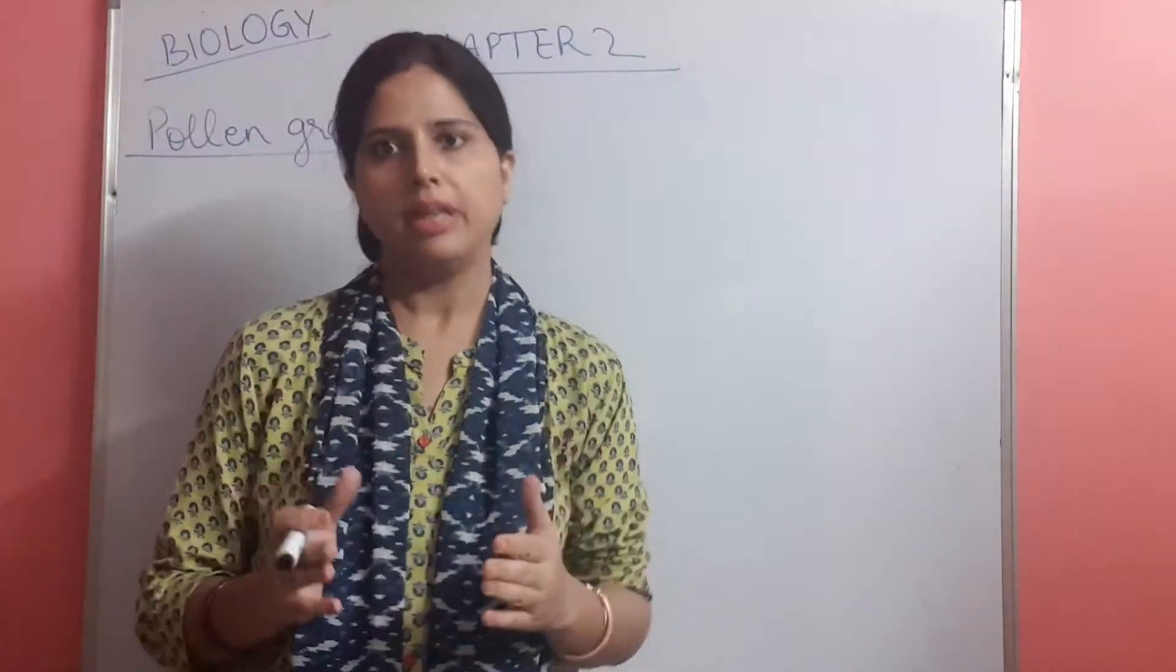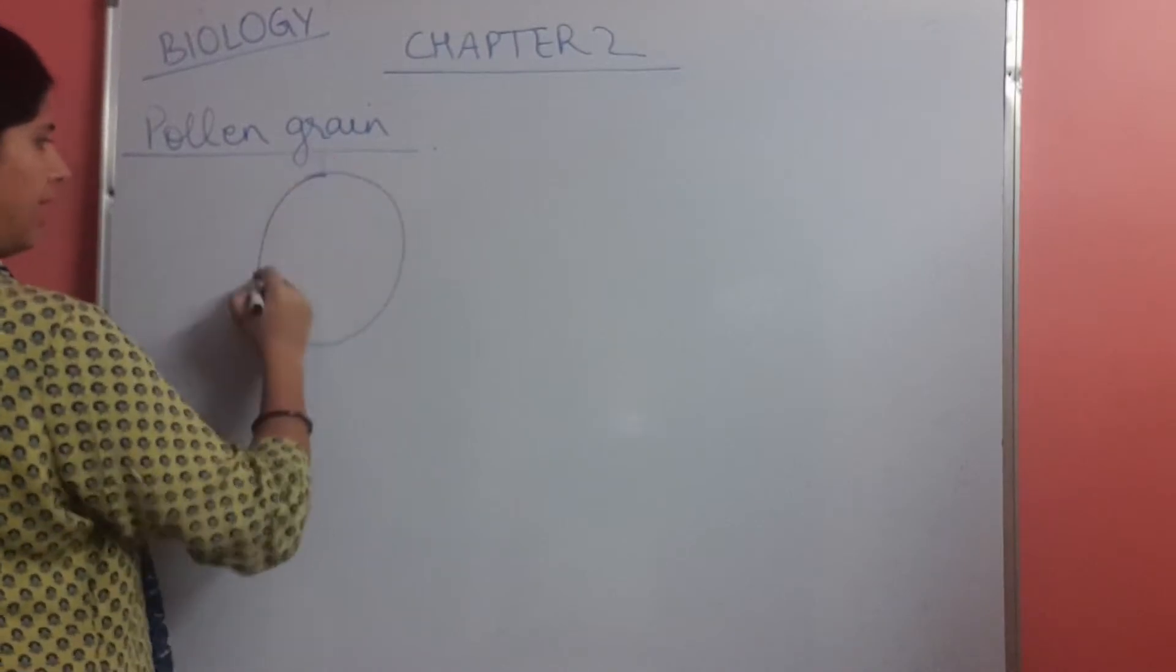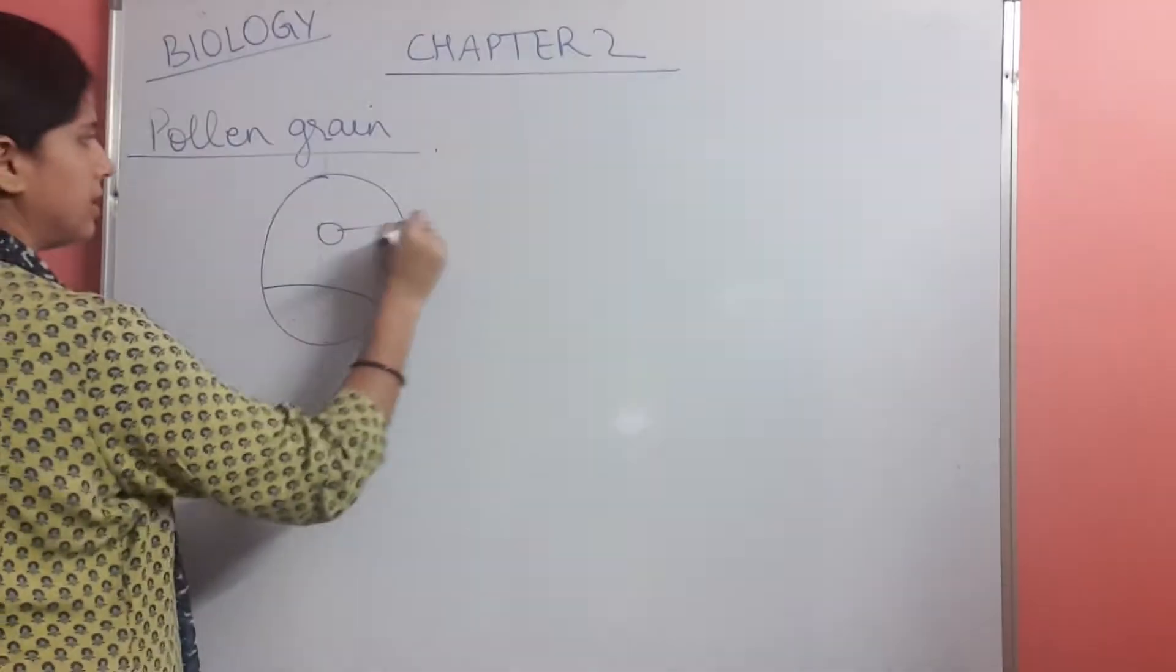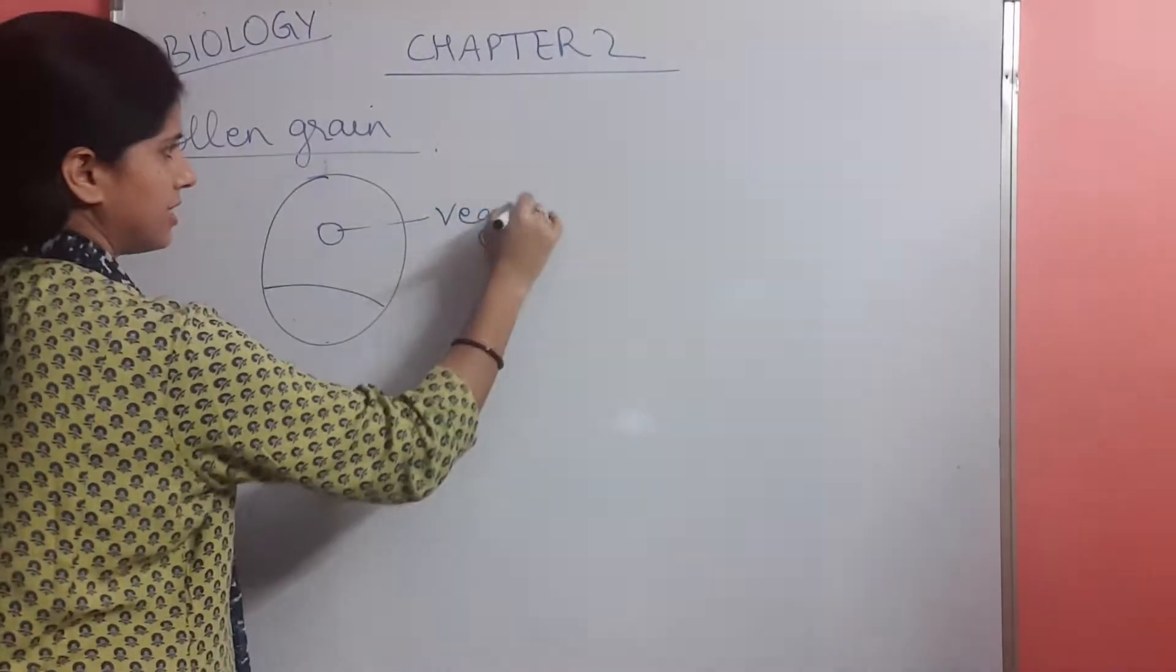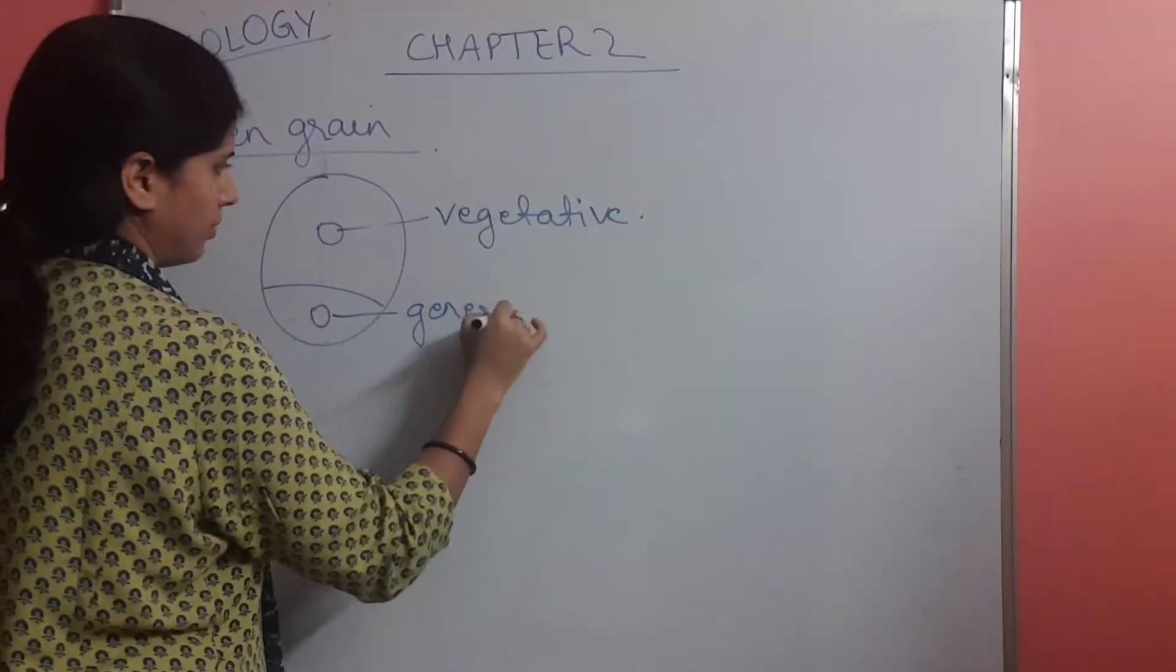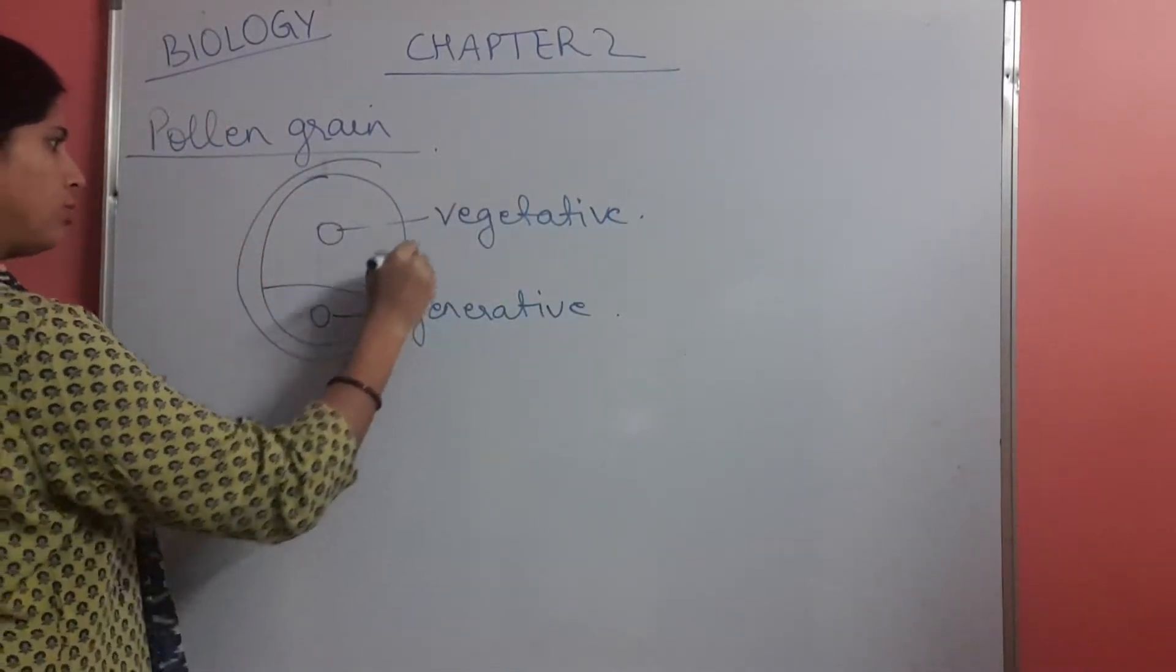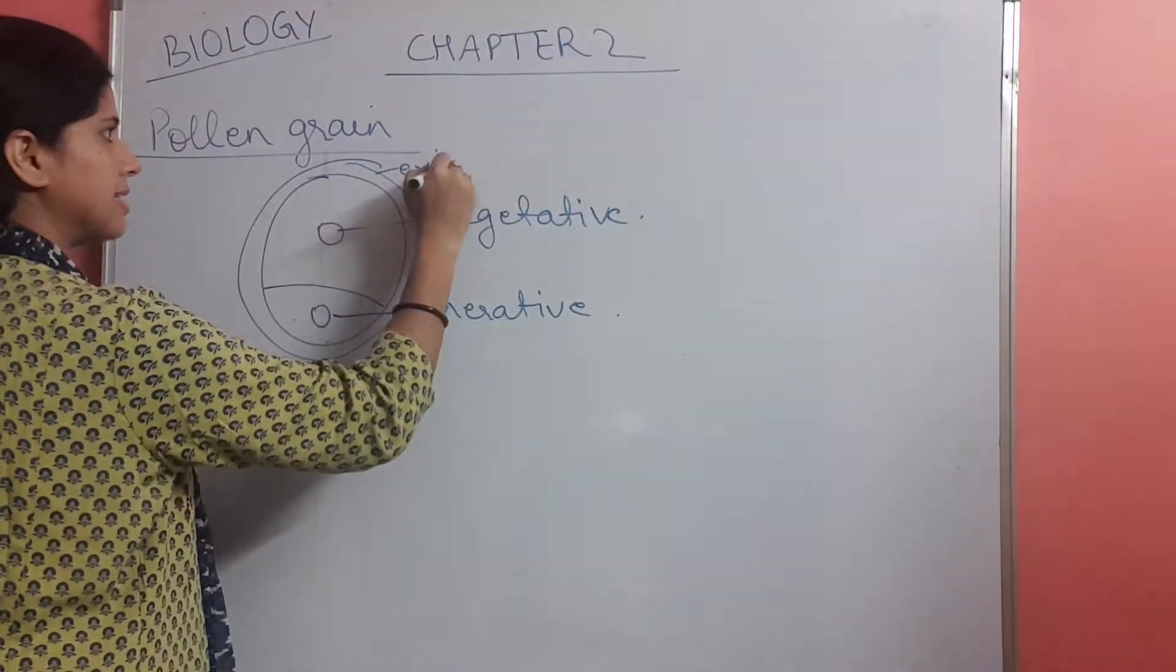Now pollen grain consists of a bigger cell, that is the vegetative cell, and the smaller cell, that is the generative cell. Now it consists of two layers. The outer is the exine layer.